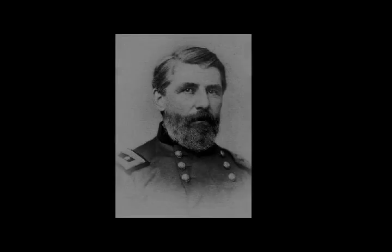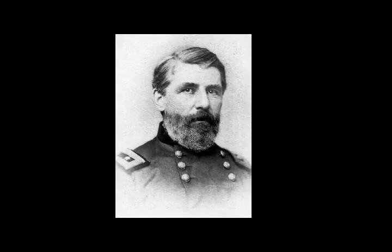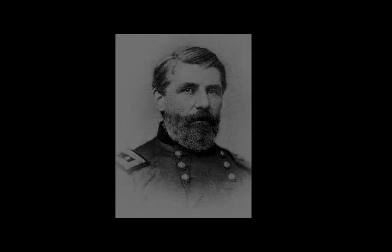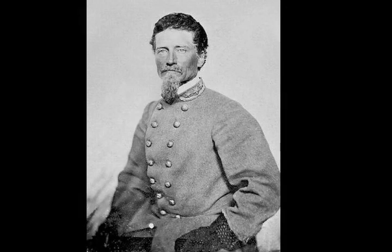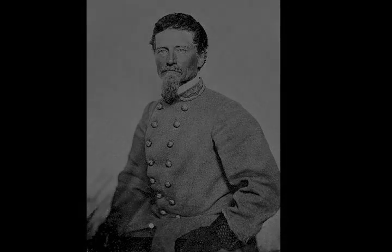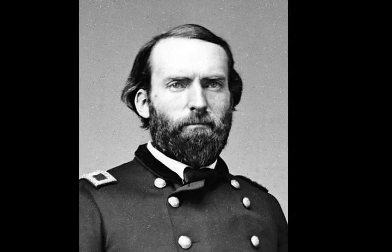Price's Army marched to Ripley where it joined Van Dorn on September 28. Van Dorn was the senior officer and took command of the combined force, numbering about 22,000 men. They marched on the Memphis and Charleston Railroad to Pocahontas, Tennessee, on October 1. From this point they had a number of opportunities for further moves and Grant was uncertain about their intentions. When they bivouacked on October 2 at Chihuahua, Grant became certain that Corinth was the target. The Confederates hoped to seize Corinth from an unexpected direction, isolating Rosecrans from reinforcements, and then sweep into Middle Tennessee.